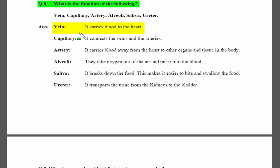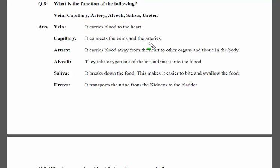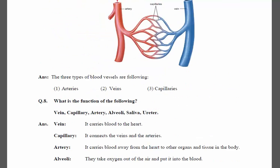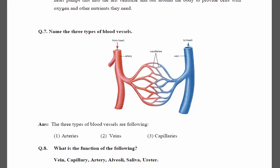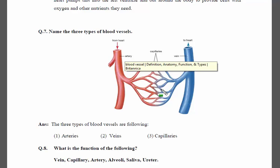Next are capillaries. Capillaries connect the veins and the arteries. Looking at this diagram, you can see arteries on one side and veins on the other, and in between them are the capillaries. So capillaries connect the arteries with the veins.